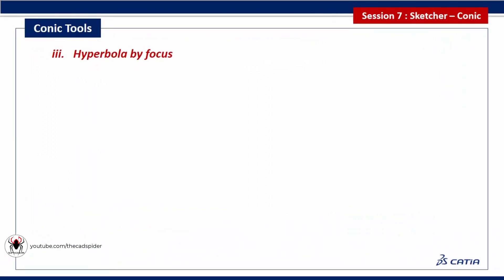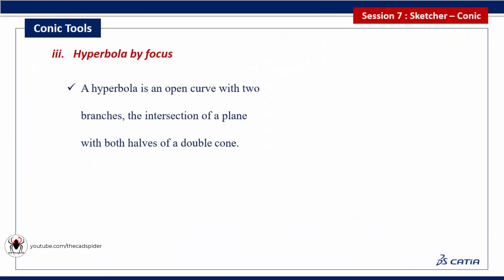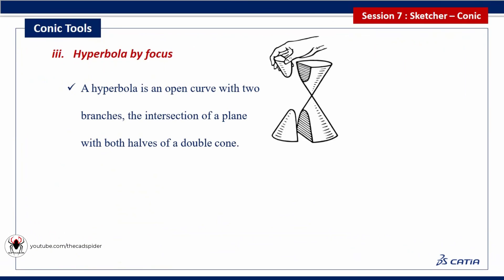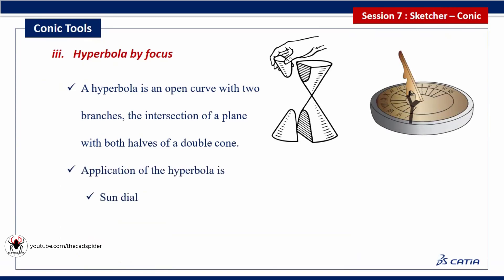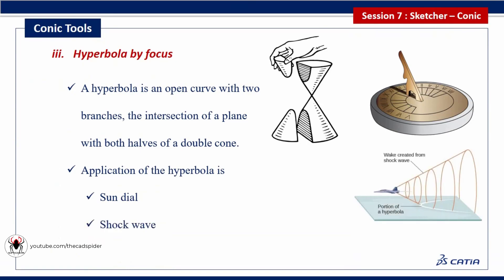The next tool is hyperbola. Hyperbola is an open curve with two branches — the intersection of a plane with both halves of a double cone. Applications of the hyperbola include sundial, shock wave, and cooling tower.